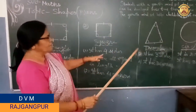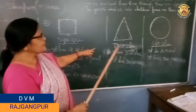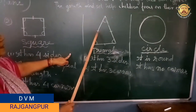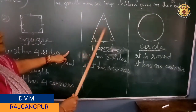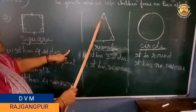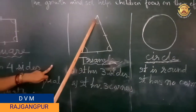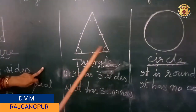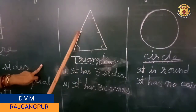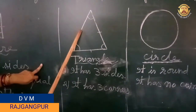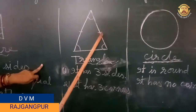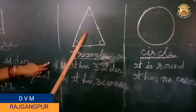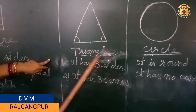Now the third shape is triangle. Triangle means 3 sides, and triangle also means corner: 1, 2, 3. It has 3 corners and 3 sides: 1, 2, 3.